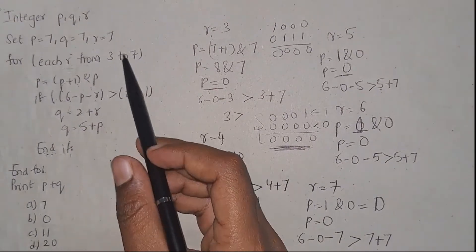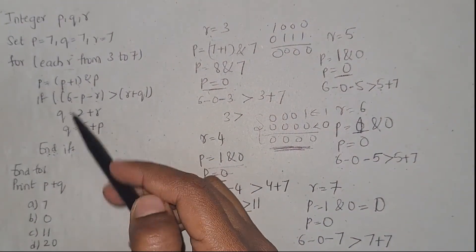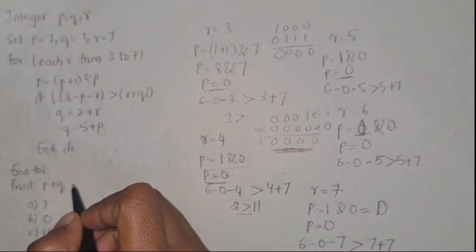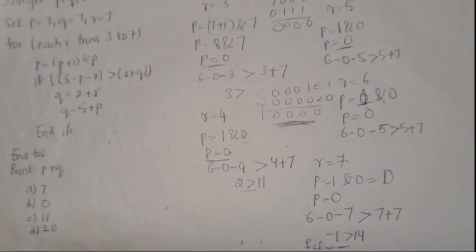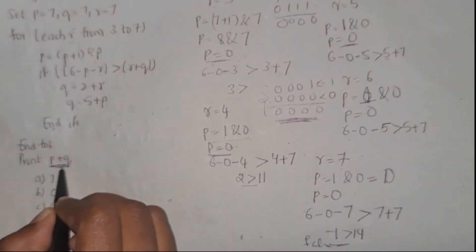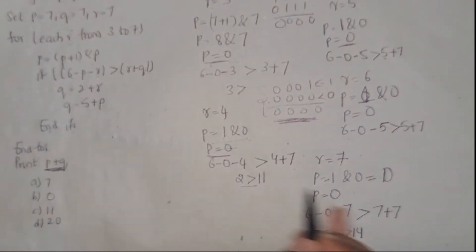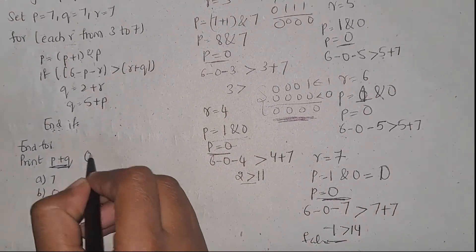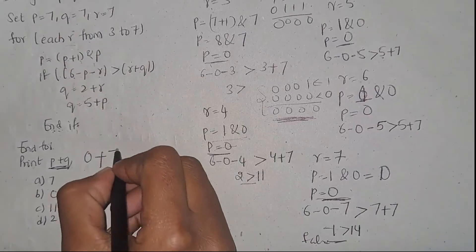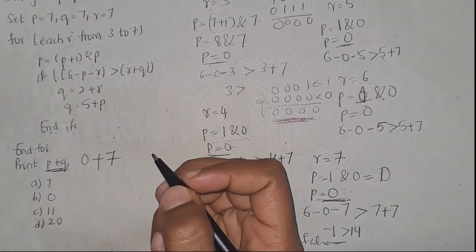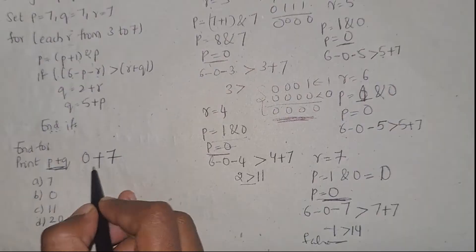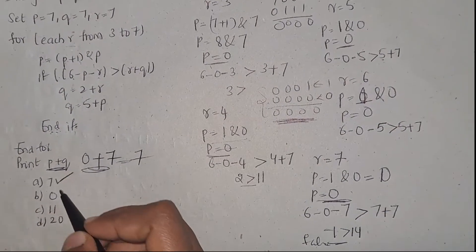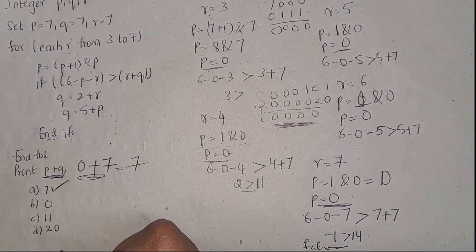You will get out of the if condition. Now you have to print p plus q. p value is 0, and q is 7, so 0 plus 7 equals 7. Your answer will be 7, so option A is the right answer.